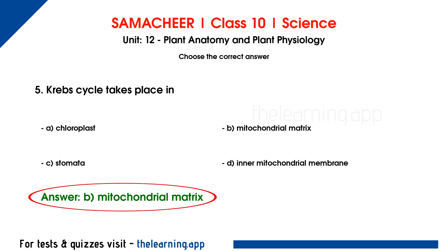In the Krebs cycle, there is aerobic respiration with multiple stages. The first stage is glycolysis, and the second stage is the Krebs cycle. In the Krebs cycle, pyruvic acid is oxidized into carbon dioxide and water. It is also called the tri-carboxylic acid cycle.